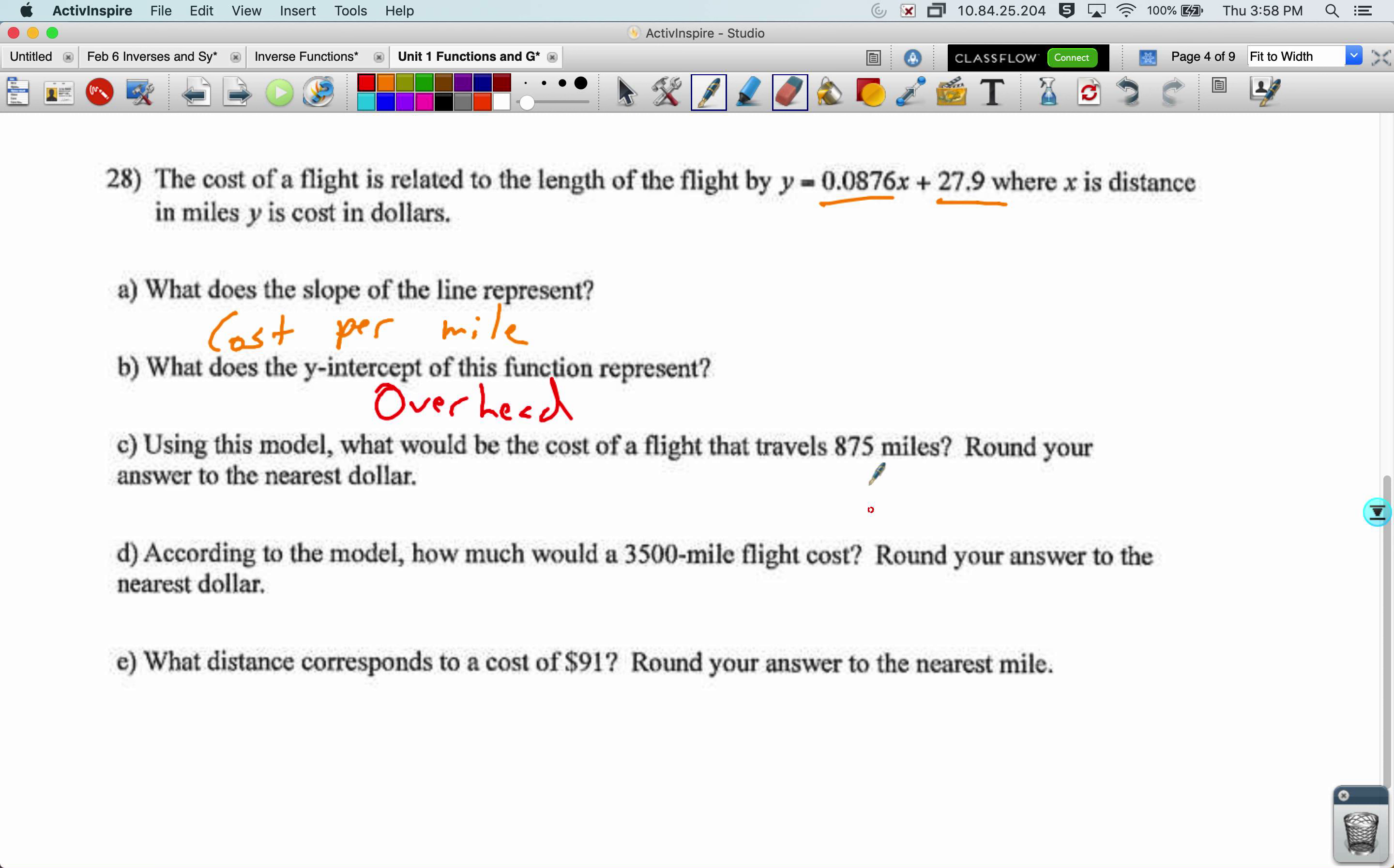Using this model will be the cost of a flight that travels 875 miles. So I'm going to plug in 875 miles for the spot for distance, which is x, and solve. So y equals 0.0876 times 875 plus 27.9. And that whole right-hand side can just be plugged into your calculator. 0, 8, 7, 6 times 875 plus 27.9. $104.55.